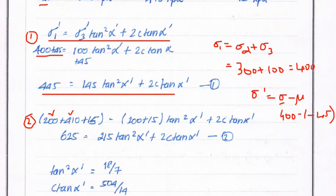For Test 2: sigma 1 equals 200 plus 410 equals 610 kPa, and pore water pressure is minus 15 kPa. So sigma 1 dash equals 610 plus 15 equals 625 kPa, and sigma 3 dash equals 200 plus 15 equals 215 kPa. This gives Equation 2: 625 equals 215 tan squared alpha plus 2c tan alpha.